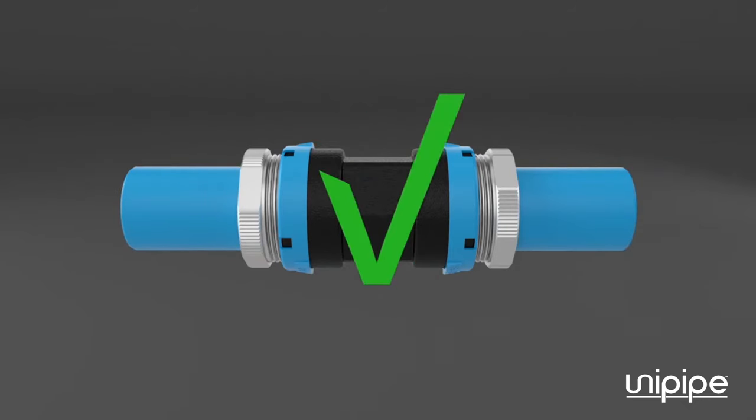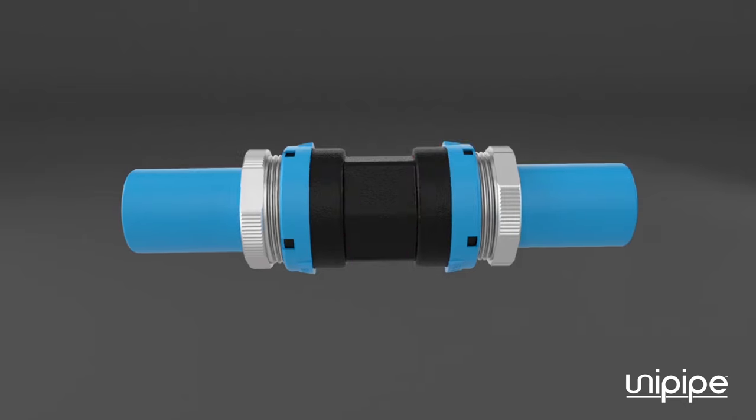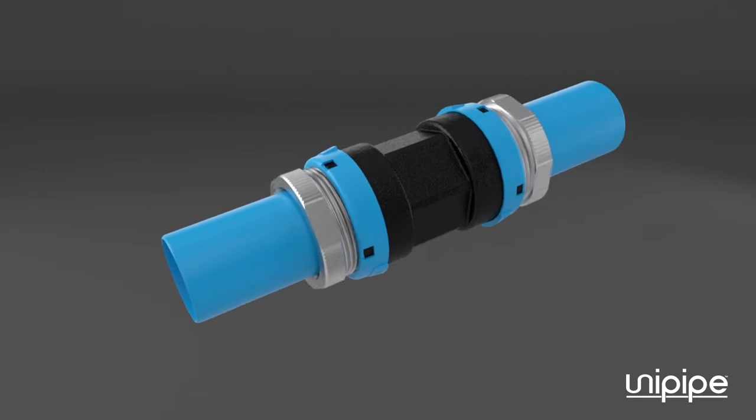Complete the tightening of the nut using a wrench. Stop at approximately a quarter of a turn past hand tight, or as soon as the pipe starts to turn.